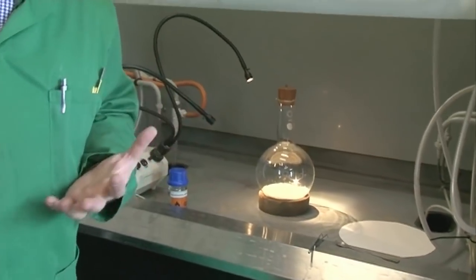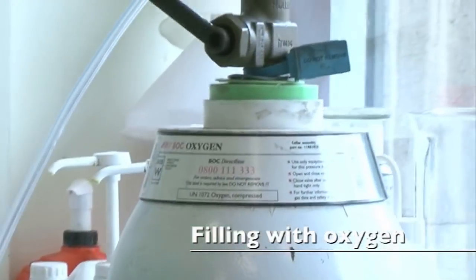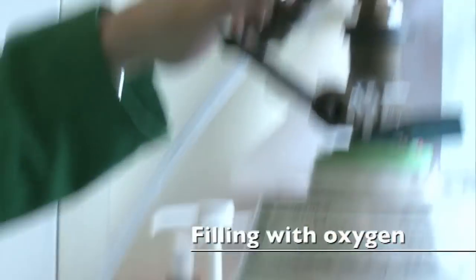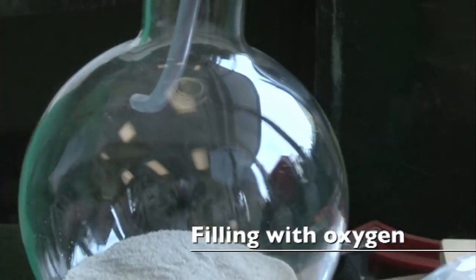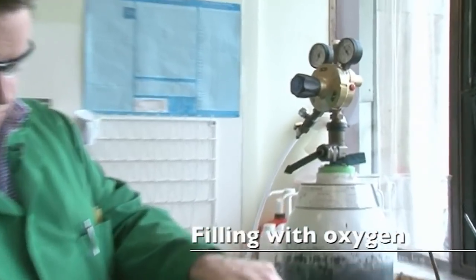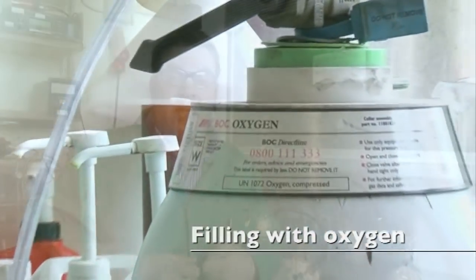So it's just a simple round bottom flask that we filled with oxygen. Now why have we filled it with oxygen? Well we've done that because we want to increase the concentration of oxygen by removing the diluent gas which is nitrogen, because nitrogen doesn't sustain combustion and will slow down the reaction.